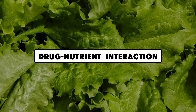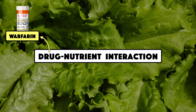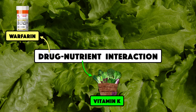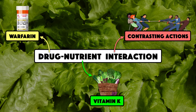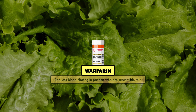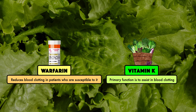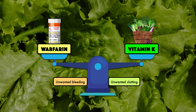In this video, I'm going to cover a classic drug-nutrient interaction. The drug is warfarin, the nutrient is vitamin K, and there's an interaction because they have contrasting actions. On the one hand, warfarin reduces blood clotting in patients who are susceptible to it. On the other hand, the primary function of vitamin K is to assist in blood clotting. Thus, an appropriate balance must be found to minimize risk of unwanted clotting and bleeding.